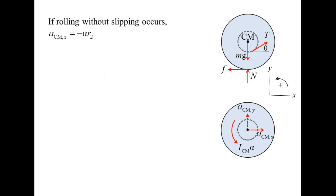If rolling without slipping occurs, we can obtain a fourth equation. In that case, the x-component of the center of mass is equal to negative alpha times R2. The negative sign appears because a positive angular acceleration would result in the center of mass accelerating in the negative x-direction.